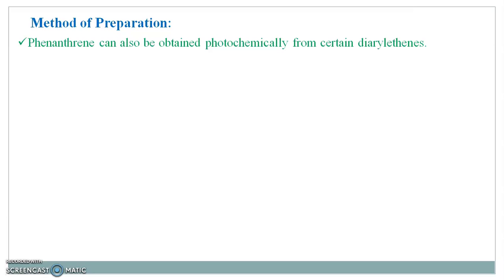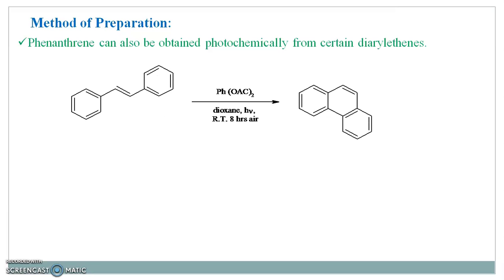The last method is that phenanthrene can also be obtained photochemically from certain diarylethanes. Simply, diarylethanes with diacetoxyphenyl in the presence of dioxane produce phenanthrene.